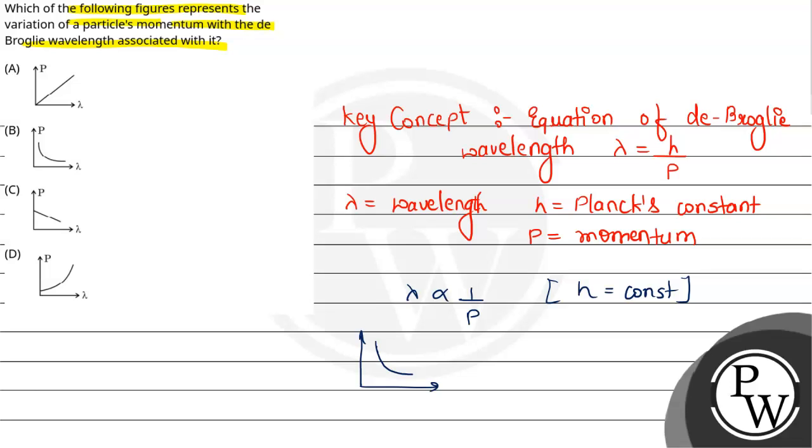Now, if we check the options, we can see option A shows p increasing and lambda increasing. This is directly proportional, so A is wrong. What about C? It shows a decrease, but it is a straight line with decreasing slope. That means C is also wrong.